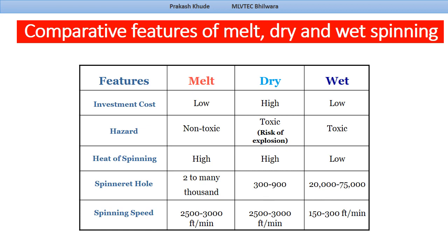To summarize, we have discussed all three spinning systems — their components, how spinning takes place, and the different fibers produced. Melt spinning requires the polymer to not undergo thermal degradation, applicable to polyester, nylon, polypropylene, and polyethylene. In dry spinning, the solvent is removed by hot air. In wet spinning, the spinneret is kept in a coagulation bath and the solvent is removed by chemical means. I hope you understand all the basic concepts related to melt spinning, dry spinning, and wet spinning. Stay tuned, thank you.